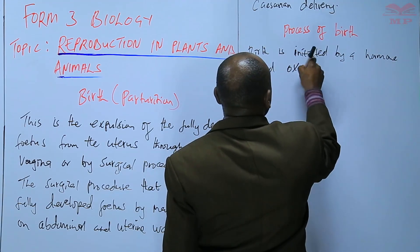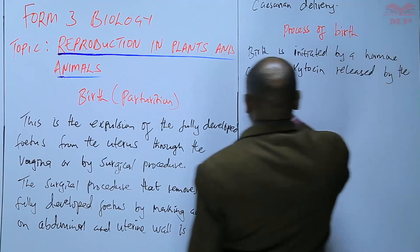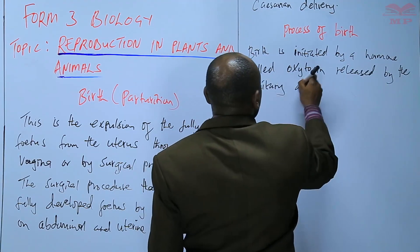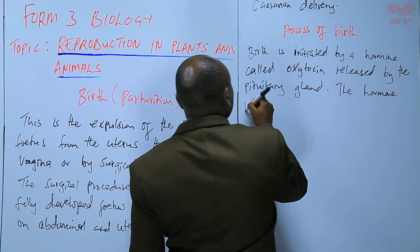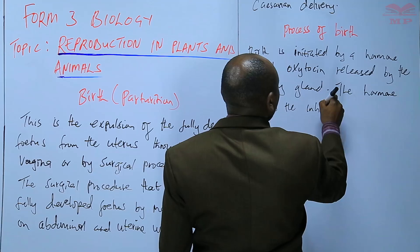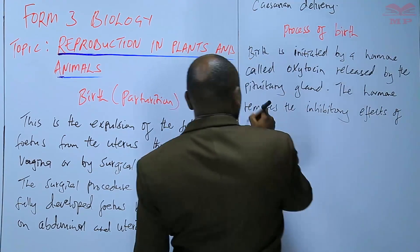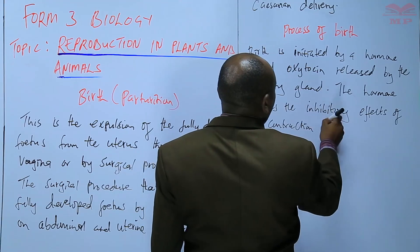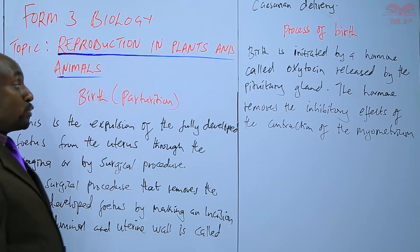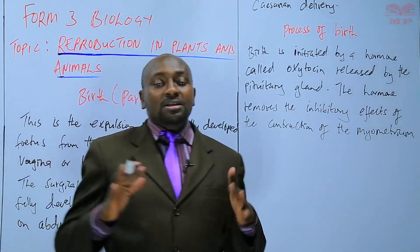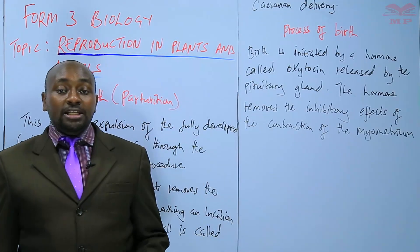Birth is initiated by a hormone called oxytocin, released by the pituitary gland. The hormone removes the inhibitory effects of the contraction of the myometrium. So myometrium is the outer uterine wall. Once the hormone is released, the myometrium starts contracting, and this contraction of the myometrium is what brings about the labor pains.